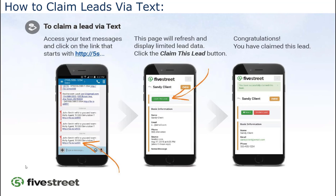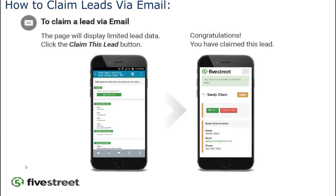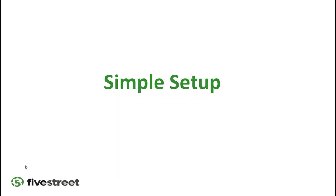Once you claim the lead it becomes yours. If it was a company-generated lead, you'll see a screen that says 'You have successfully claimed this lead.' If someone else claimed it first, it will say 'Unfortunately another agent has gotten this lead.' You then receive the email and phone number — on unclaimed leads that info is blurred out, but on your own listing leads it would be displayed and you wouldn't have to claim it.